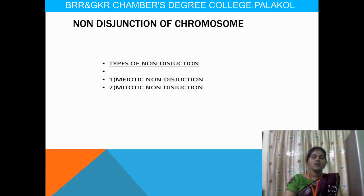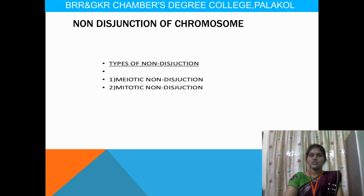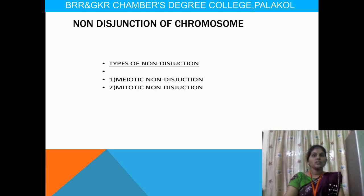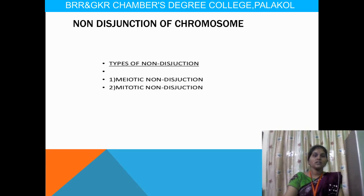The next topic is non-disjunction of chromosomes, divided into two types: meiotic non-disjunction and mitotic non-disjunction. Non-disjunction occurs when a chromosome that should separate into two chromosomes fails to do so. Some factors influence this, causing the same chromosome to move from one generation to another without separation or replication. Meiotic non-disjunction occurs during meiosis; mitotic non-disjunction occurs during mitosis.